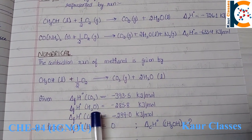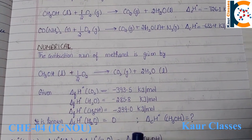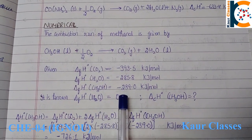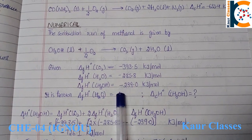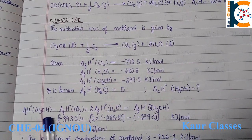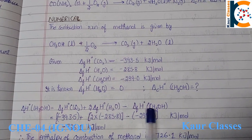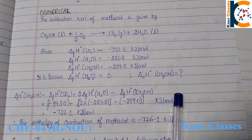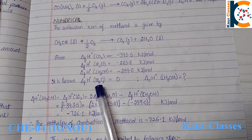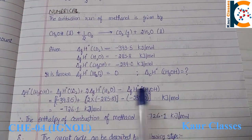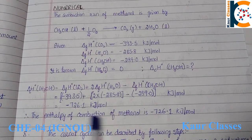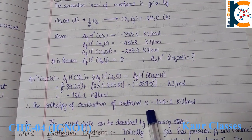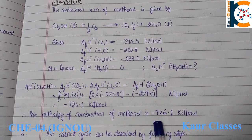For the numerical, we use the given enthalpy values for carbon dioxide and water for methanol. Since the enthalpy of oxygen is zero, we calculate enthalpy of products minus enthalpy of reactants. We do not write the enthalpy of oxygen since it is zero. After calculation, the enthalpy of combustion of methanol equals −726.1 kJ/mol.